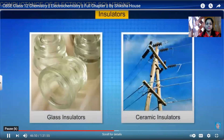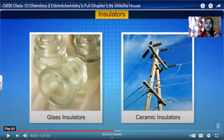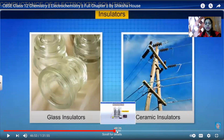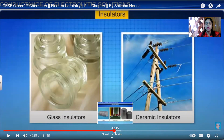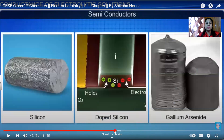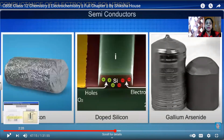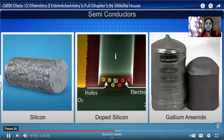Insulators are materials with very low conductivity, like glass insulators and ceramic insulators. Semiconductors are materials with moderate conductivity, such as silicon and germanium. There are also superconductors, which have zero resistivity or infinite conductivity.